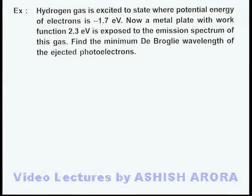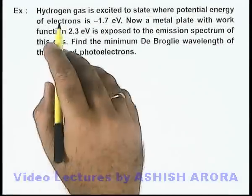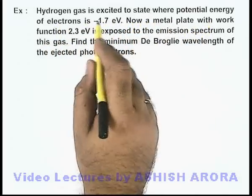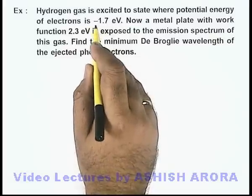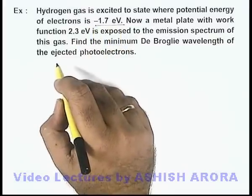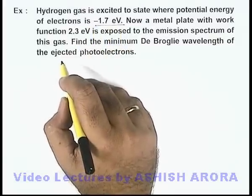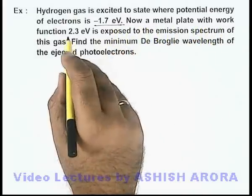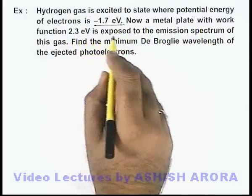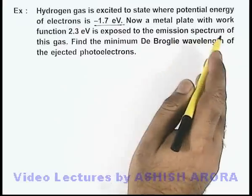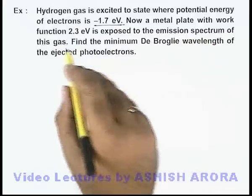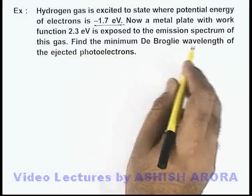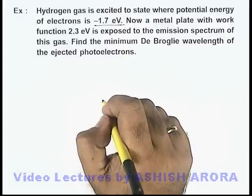In this example, we are given that hydrogen gas is excited to a state where the potential energy of the electron is minus 1.7 electron volt. A metal plate with work function 2.3 electron volt is exposed to the emission spectrum of this gas, and we are required to find the minimum de Broglie wavelength of the ejected photoelectrons.